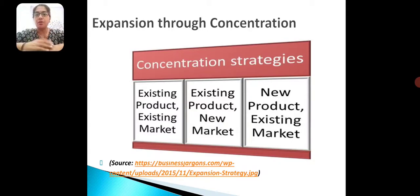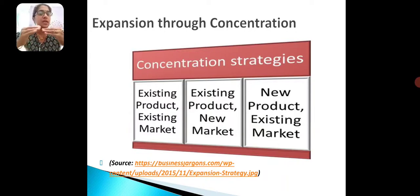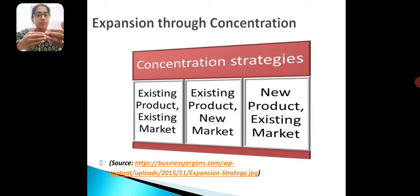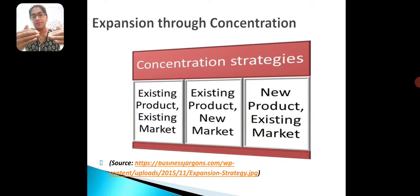Concentration can happen in these ways. First way: existing product in the existing market. For example, toothpaste — it's an existing product with an existing market share. What you are doing is either increasing your scale of operation, or producing many different variants of the same product — different flavors, sensitivity variants — expanding operation in the same product and same market, not entering a new market.